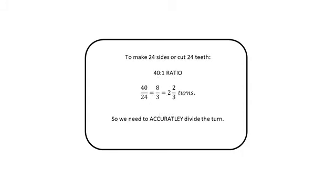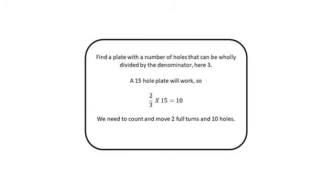Here's a much more complicated example. We've got to produce 24 sides to a shape or, more realistically, we've got to produce 24 teeth on a gear. We're still using the 40 to 1 ratio and we've got 24 teeth to cut. As you can see from the formula, the 40 over 24 or 8 over 3 gives us a total of 2 and 2 third turns. Now that means we're going to have to accurately divide the indexing plate into 2 thirds of a turn in order to produce the 24 teeth that we need for this particular project. How can we do that accurately?